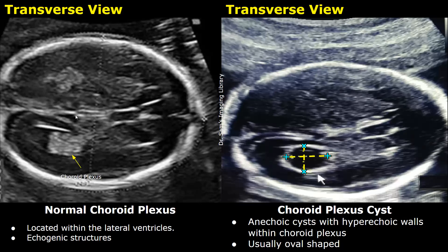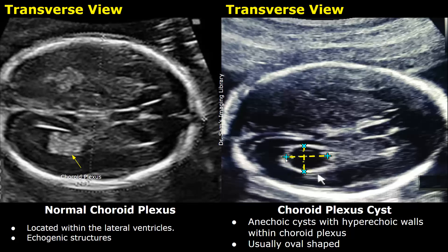The image on the left is a normal image of the brain focusing on the choroid plexus. This is a normal choroid plexus — an echogenic structure located within the lateral ventricles. This is an image of a choroid plexus cyst. A choroid plexus cyst can be associated with Trisomy 18 if other features are also seen. If it is an isolated finding, it is less likely to be associated with Edwards syndrome and usually resolves on its own. There is an anechoic cyst within the choroid plexus, and the cyst will have hyperechoic borders and is usually oval shaped.